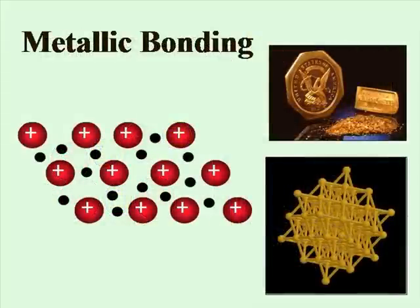Metallic bonding involves a sea of electrons that surround the metal cations. The electrons can move through to conduct electricity, and the cations can move over the electrons for malleability.